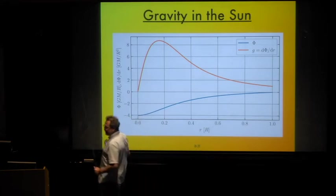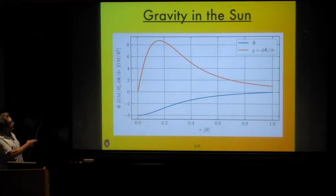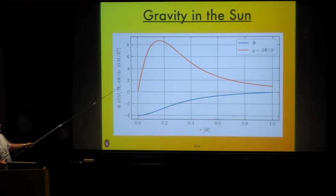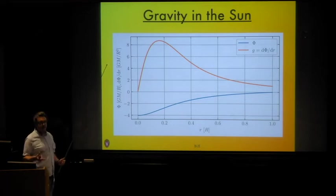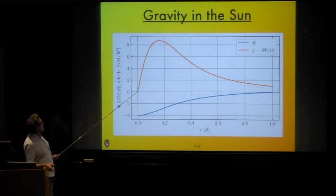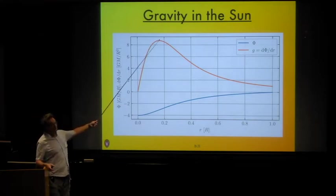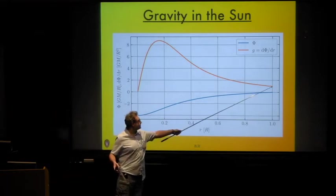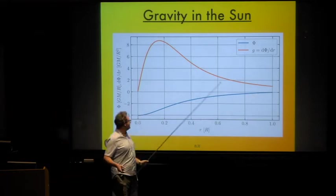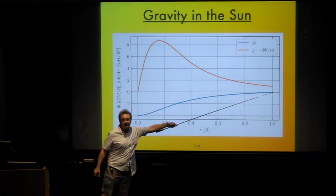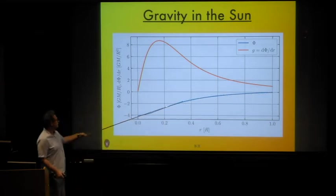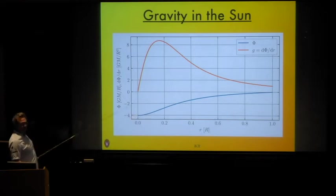Looking at gravity in our model for the present-day Sun: I'm plotting the gravitational potential scaled to GM/R and the potential gradient (scalar gravity) as a function of radius. The gravity vanishes at the center, rises to a peak just outside the core regions, and then drops off like 1/R² towards the surface. The gravitational potential is negative everywhere, taken to be zero at the surface of the star, dropping down to a potential well at the center.